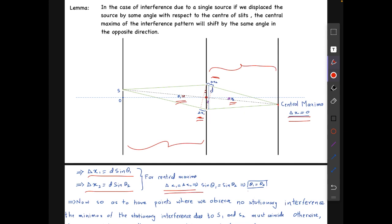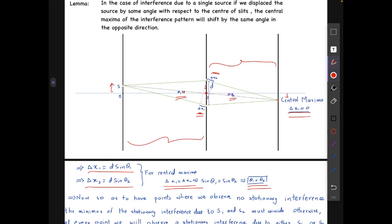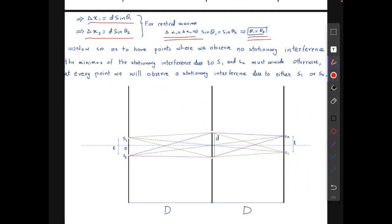For central maxima we know that delta x1 should equal delta x2. From here we clearly see that theta 1 equals theta 2. What we get is that if we displace the source by some angle theta 1, then the central maxima will obviously shift in the opposite direction by the same angle. We can use this result now.